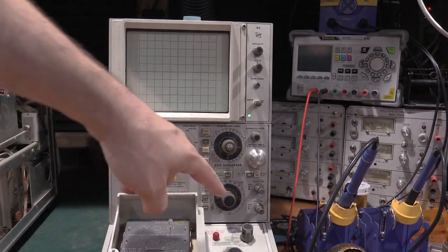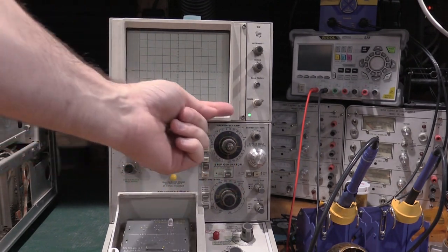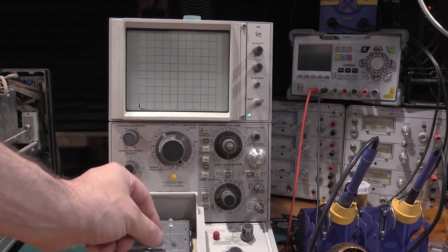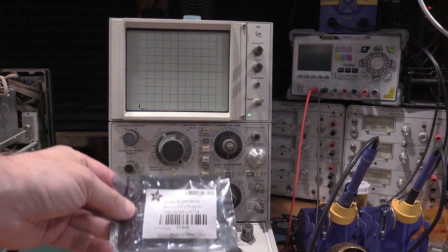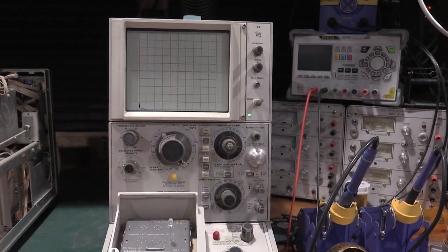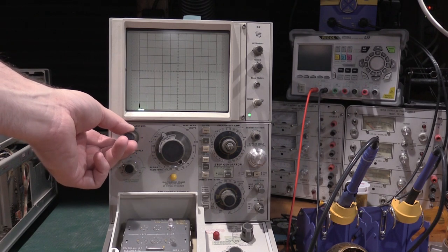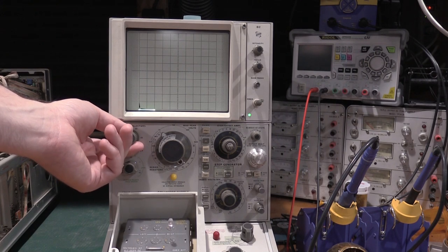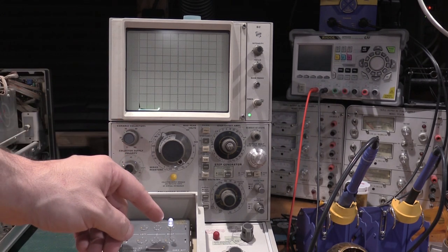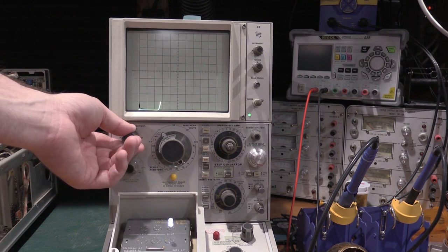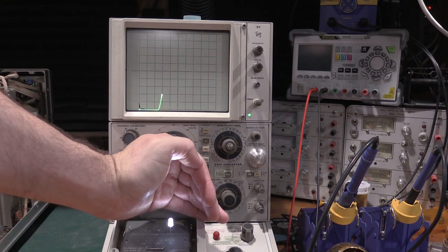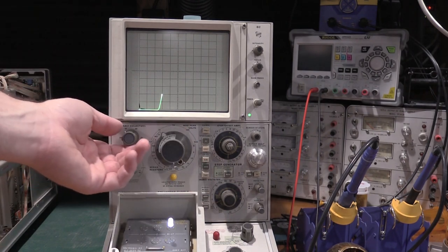Okay I've got the 577 set up for 1 volt per division this way and 10 milliamps per division this way. So I have one of these Adafruit LEDs in the test fixture. So there's 1 volt, 2 volts, 2.5 volts and we have forward current, 10 milliamps, 20 milliamps. So that's design spec for the LED. It's pretty bright. The lab is very bright right now because I'm filming. I'm pushing them a little harder than that.